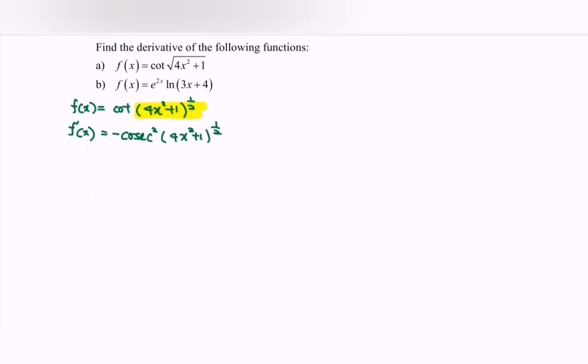So if we differentiate, we will have bracket 1 over 2, then 4x² plus 1, 1 over 2 minus 1 we will have negative 1 over 2, then the internal function.